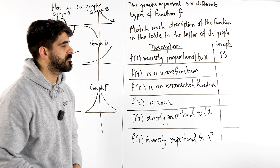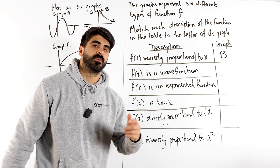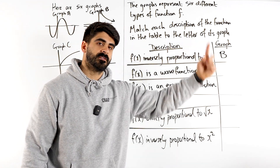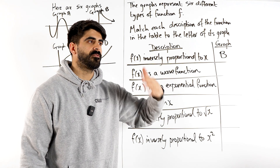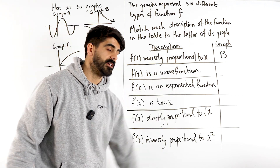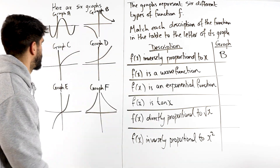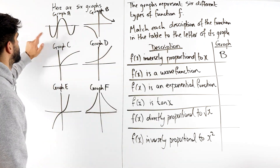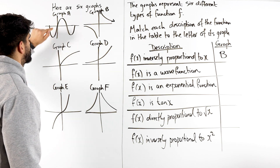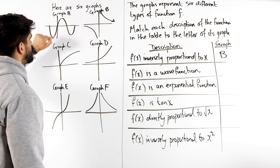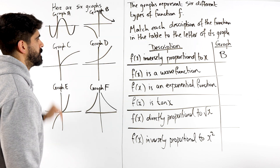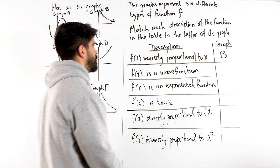F of x is a wave function. Now we need to know what the wave functions are — just doing a wave, meaning up, down, up, down, up, down. Which one is going up, down, up, down? It's this one. In particular, this is the sine graph because it starts at the origin. The cos graph will start at one. So this is graph A.